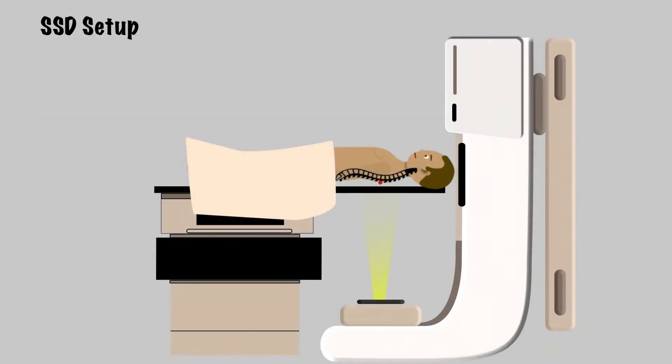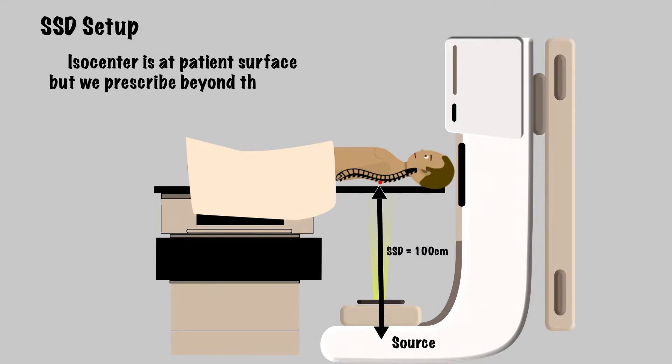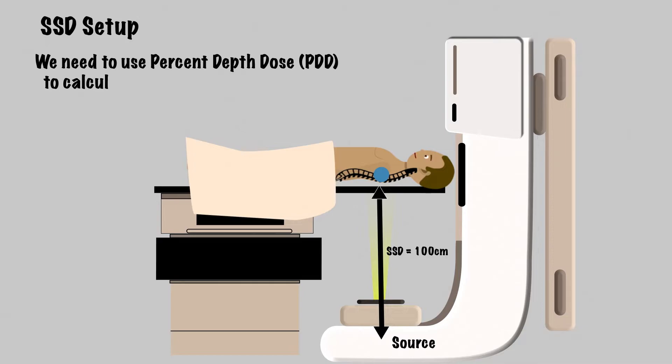When we set the isocenter, or center of rotational axis, on the patient's surface, that is what we refer to as an SSD setup. When we say setup SSD style, we usually mean at 100 centimeters. Now keep in mind, even though the isocenter is at surface for this setup, you prescribe and treat to a depth beyond the isocenter. So inverse square will need to factor in. In this circumstance, we use percentage depth dose, or PDD, for our MU calculations.